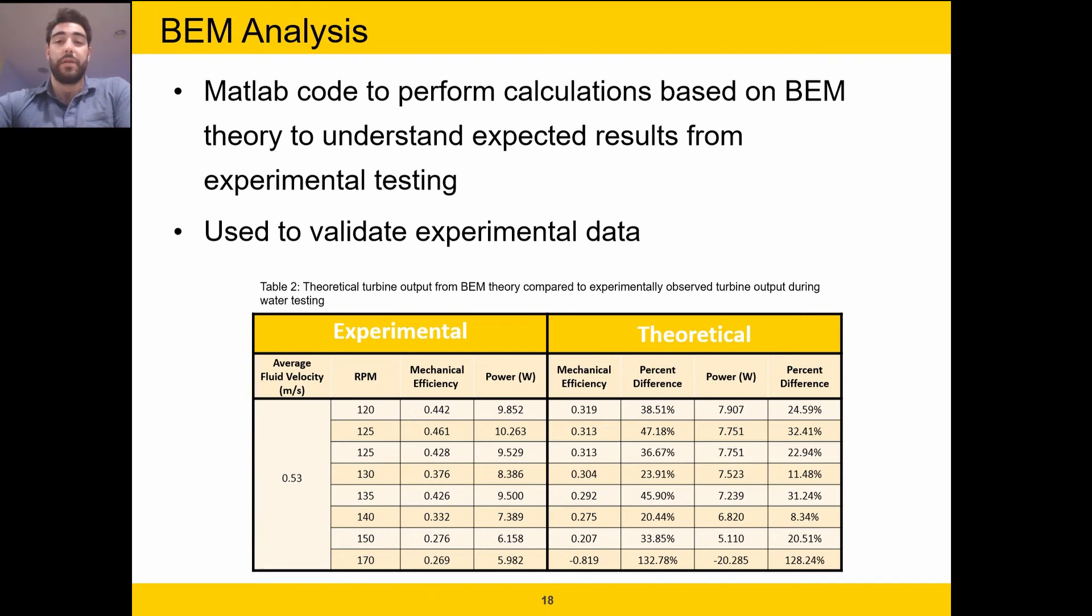Table 2 shows a sample of these results at a single fluid velocity across a range of RPMs. These experimental results are side by side with the values expected based on BEM theory. This comparison allows us to confirm the trends we see in our data, which here we see that our turbine is actually performing more efficiently at lower RPMs, which means it's performing more efficiently and producing more power when there's a greater load on the turbine. The BEM code was also used to verify the results from CFD simulations and I will now pass it on to Anthony to talk more about the CFD simulations done on this turbine.